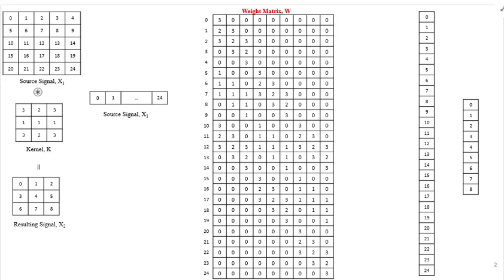Continuing from the last unit, we proceed with our discussion of visualizing convolutional layers as fully connected layers. Let's denote the source signal as x1 and the kernel as k. x1 and k have 5 by 5 and 3 by 3 dimensions respectively.